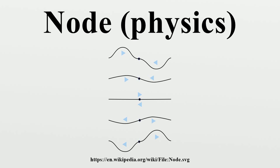In contrast, molecular orbitals with a node between nuclei will not be stable due to electrostatic repulsion and are known as antibonding orbitals, which weaken the bond. Another quantum mechanical concept is the particle in a box, where the number of nodes of the wave function can help determine the quantum energy state. Zero nodes corresponds to the ground state, one node corresponds to the first excited state, and so on.